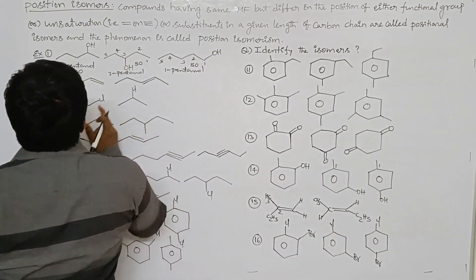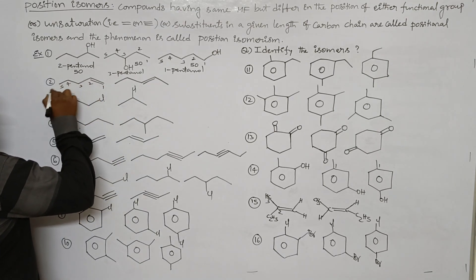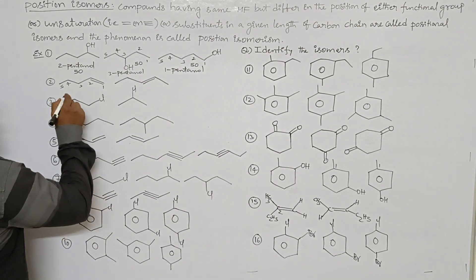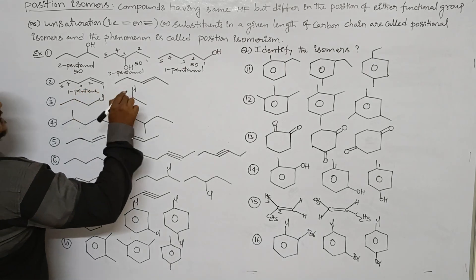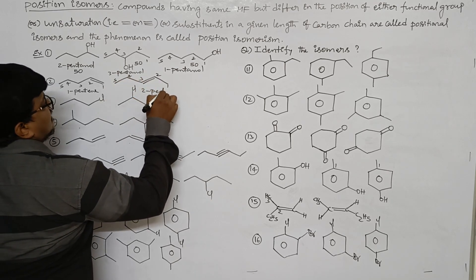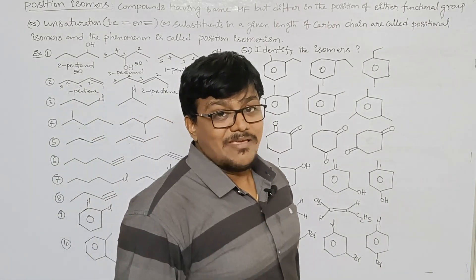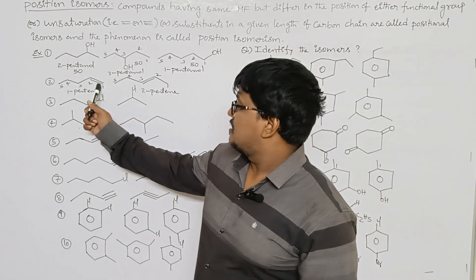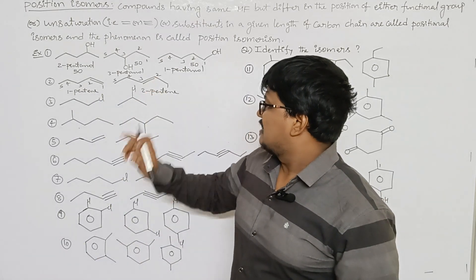The second example involves an unsaturated compound. With 5 carbons present in the long chain, the first compound is named 1-pentene, where the double bond is at the first position. The second compound is named 2-pentene, where the double bond is at the second position. Both have the same molecular formula and the same parent chain, but the position of the double bond differs.